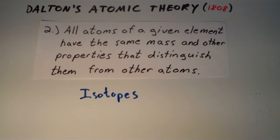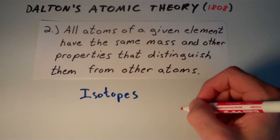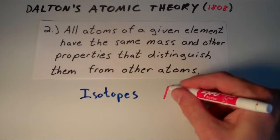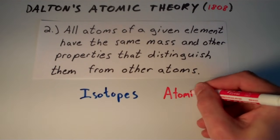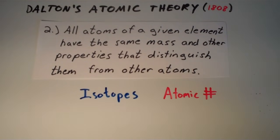They differ only in the number of neutrons. And today, the way that we characterize an element is we say that instead of all atoms of a given element have the same mass, we say that all atoms of a given element have the same atomic number, which is simply the number of protons in the nucleus of that atom.